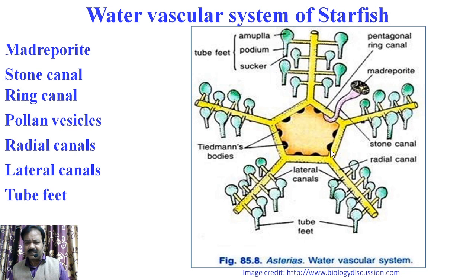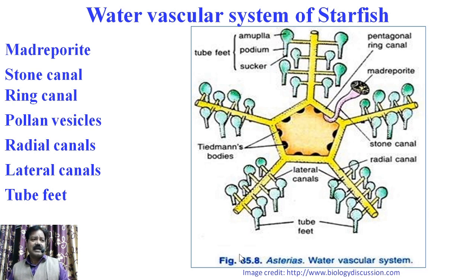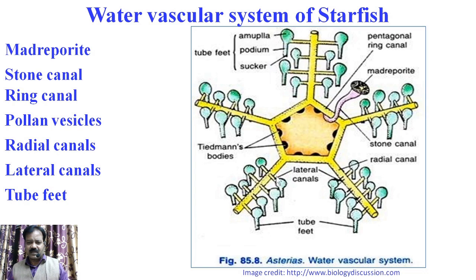The ring canal gives off five ciliated radial canals, one in each arm. Each canal extends throughout the ambulacral groove and terminates as a terminal tube. The lateral canals are pairs that arise from the radial canal in each arm. Each lateral canal is attached to the base of a tube foot. The point of attachment contains valves to prevent backflow of water from the tube feet to the lateral canal.